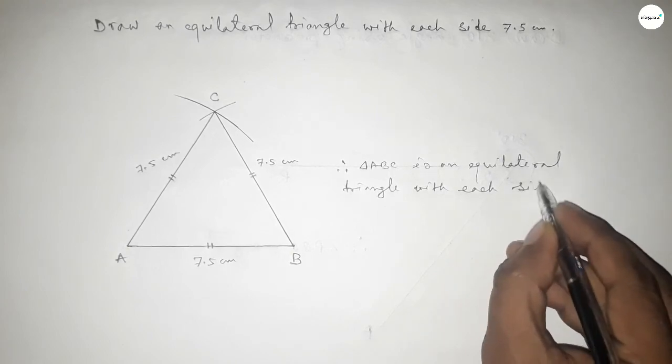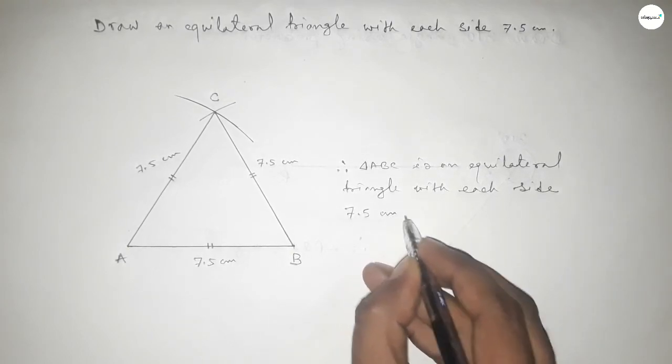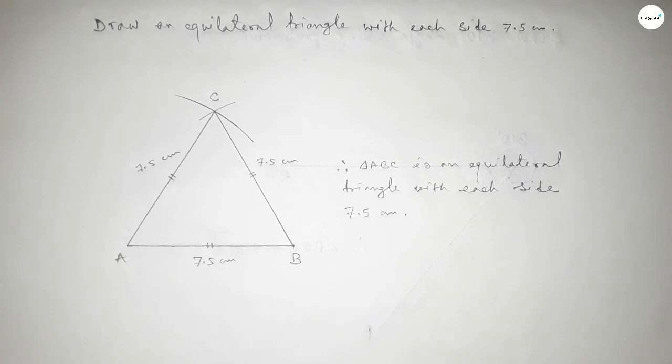So this is the process to construct an equilateral triangle with each side 7.5 centimeter. That's all, thanks for watching. If this video is helpful to you then please share it with your friend. Thanks.